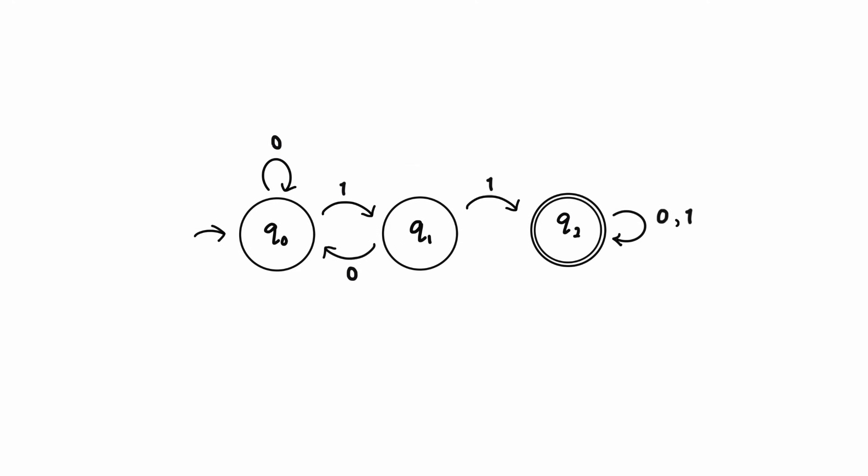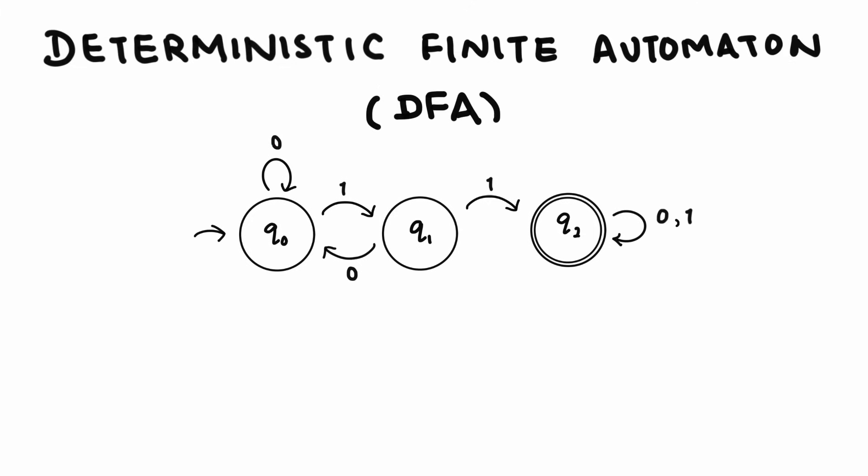This kind of automaton is called a deterministic finite automaton, or DFA for short. They are called deterministic because for every symbol of an input string read, we will always know what the next state will be. The next state is determined. What we have here is a state diagram of the DFA. And to formally define DFAs, we use a 5-tuple.